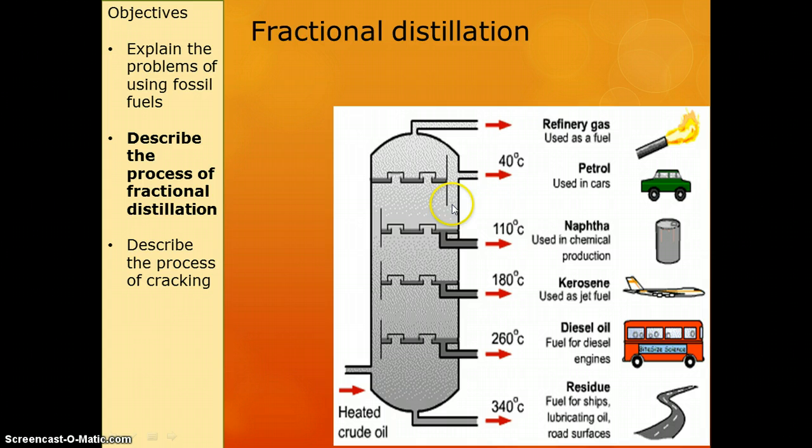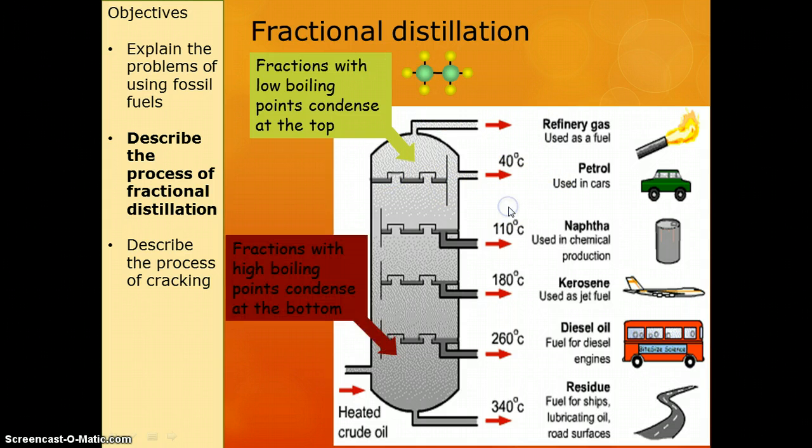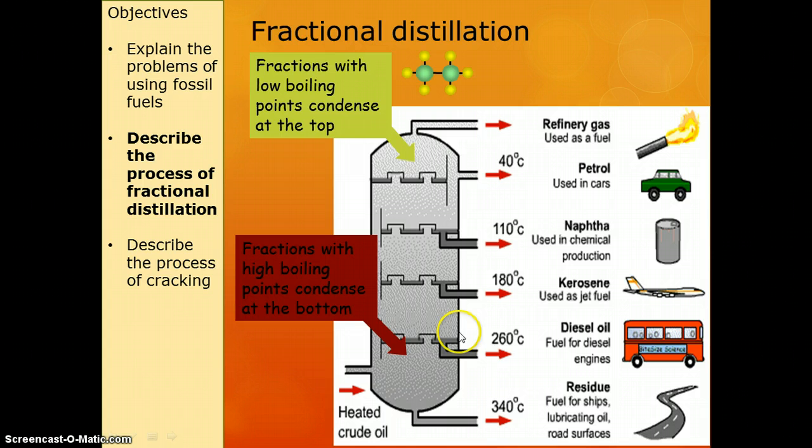We've got our different fractions. Fractions with the low boiling point go all the way to the top, so as an example, a nice little short hydrocarbon. At the bottom is where we have our fractions that have got our high boiling points, and this is where they come off. These will be our long chain hydrocarbons.